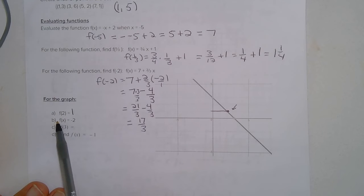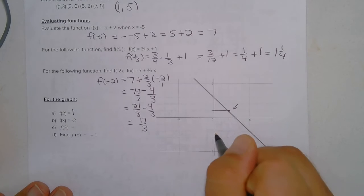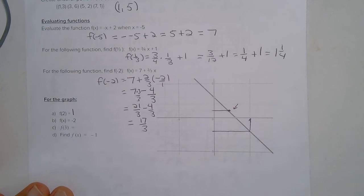Then we have to find the x value. So f of x is negative 2. So that means the y value is negative 2. That's right here. So the x value that makes that is 5.